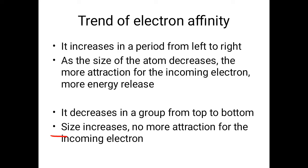Electron affinity values decrease in a group from top to bottom because the size increases down the group. When a new electron adds up to the atom, there is very little attraction for the incoming electron, so there is no favorable attraction for that electron — that's why the value decreases.